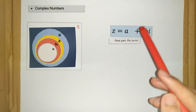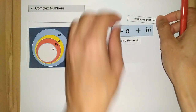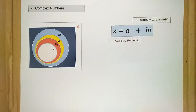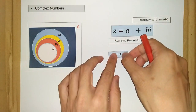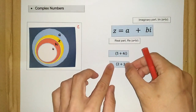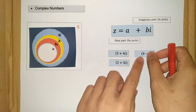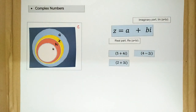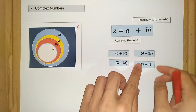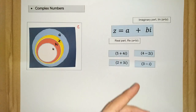And B is what we call the imaginary part of the number. For instance, let's say we have these numbers: 5 plus 4i, 2 plus 3i, 4 minus 2i, and 3 minus i. These are examples of what we call complex numbers.